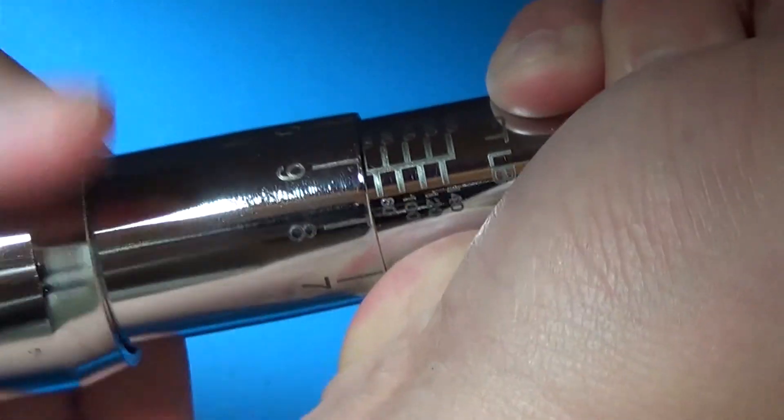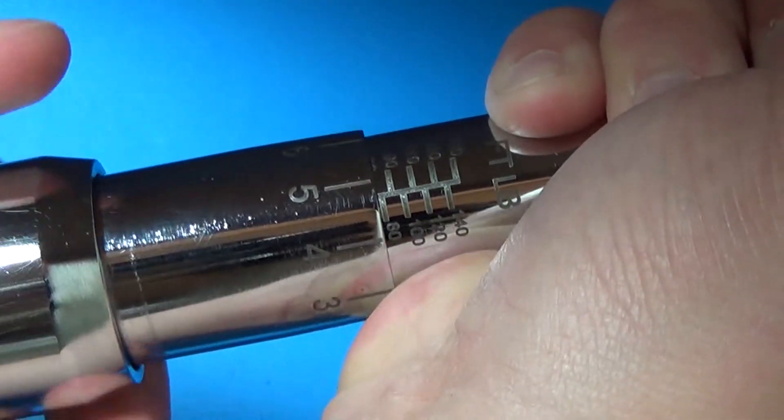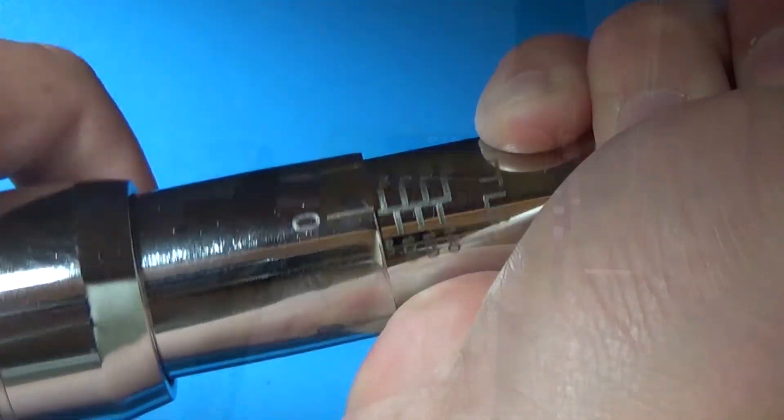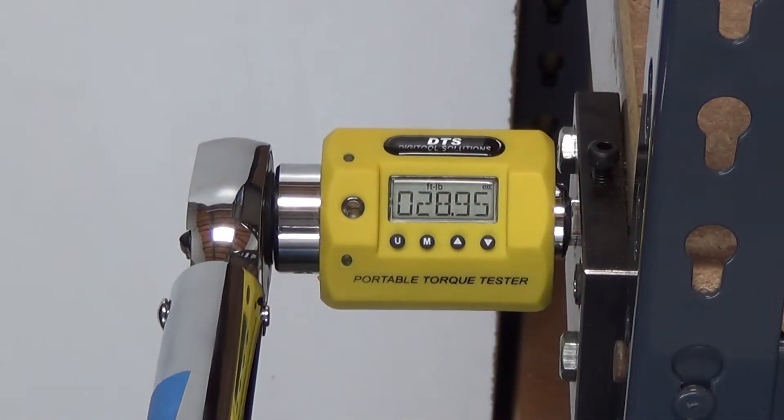The last step is to set the target torque on the tool you want to test. In this case, a mechanical torque wrench. Plug it in and apply torque.